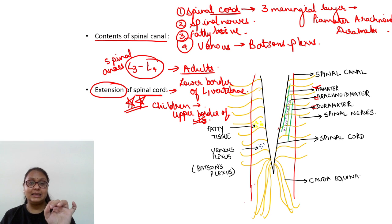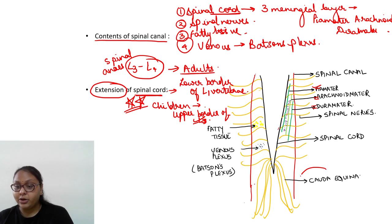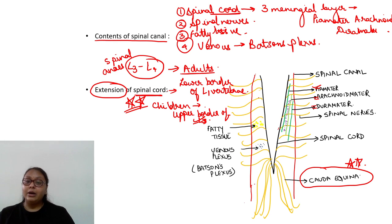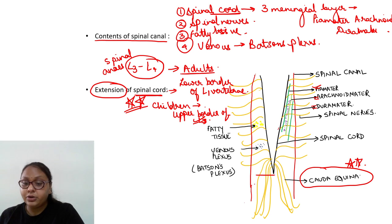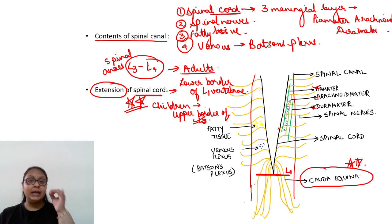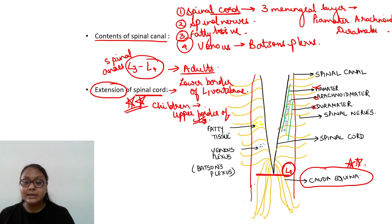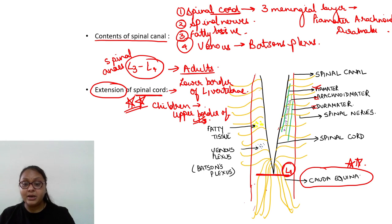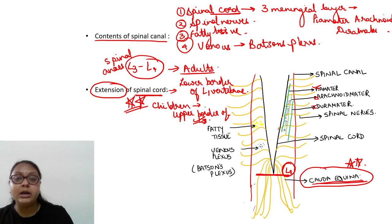What is cauda equina? Since the spinal cord ends at L1 in adults, the lower lumbar and sacral spinal nerves must travel a little distance before exiting through their corresponding intervertebral foramina. These nerves form a horse-tail-like appearance and that is known as the cauda equina.